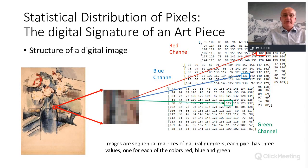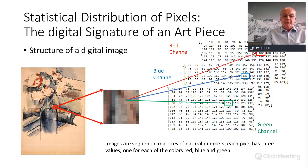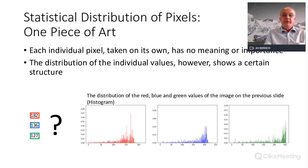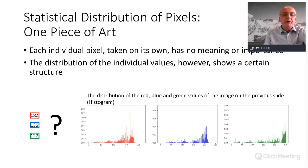A digital image is built up of three channels — one for green, one for blue, and one for red. In mathematical terms it is a matrix, or three matrices behind each other. If you look at the statistical distribution of pixels within one piece of art, they have a certain distribution — for example, red pixels around value 170 may be very dominant while near zero there are hardly any pixels.